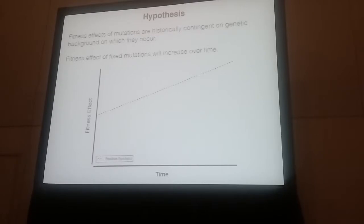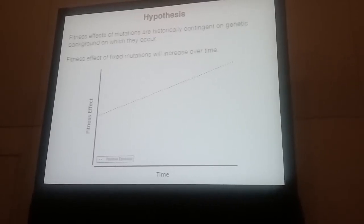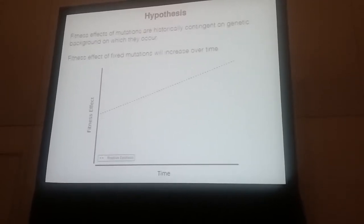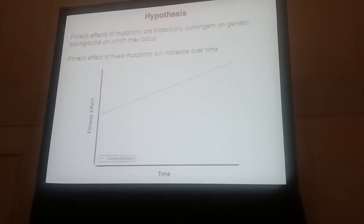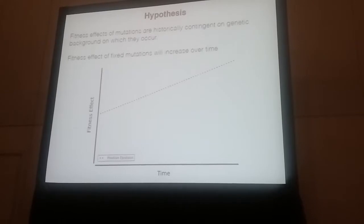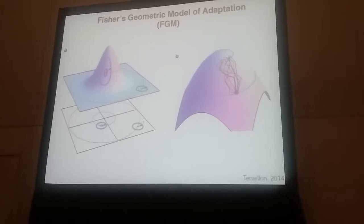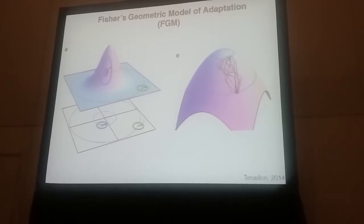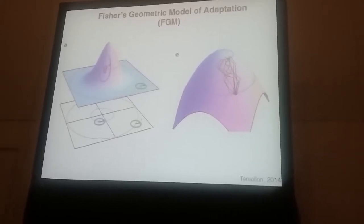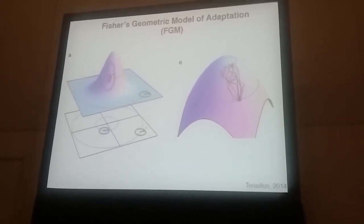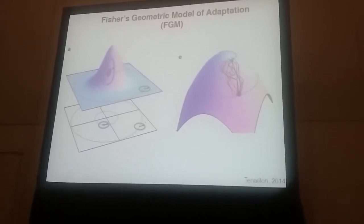The hypothesis here is that if there is historical contingency — the dependence of fixing beneficial mutations on the genetic background — we expect that reverting an early focal mutation, its fitness cost will increase over time due to those positive effects. So what we can do to get some insight into how that would work is use a model — Fisher's geometric model.